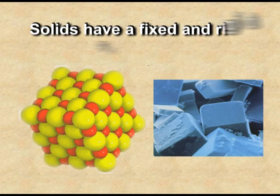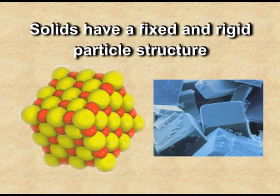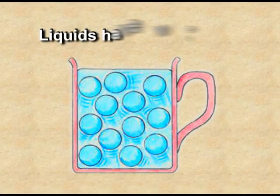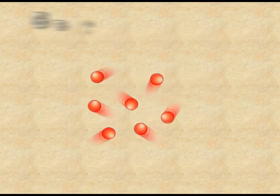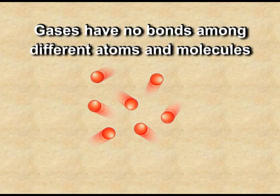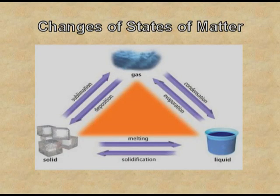Solids have a fixed and rigid particle structure because the constituent particles are very closely packed. Liquids have weak bonds and the molecules are free to move. Gases have no bonds among different atoms and molecules. Liquids and gases can take the shape of any container. In the liquid state, molecules are not closely packed compared to solids and can move freely, but liquids have a fixed volume. Gases have very weak intermolecular forces; they neither have a fixed shape nor a fixed volume. All three states are interconvertible — we can change solid into liquid and liquid into gas, and vice versa.